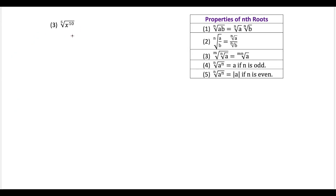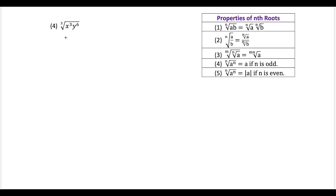For the third question, we want to find the fifth root of x to the 10, and once again we don't need the absolute value. One way to see this is that our index is odd. So this is just x to the 10 over 5, which is equal to x squared. And if we were to add the absolute value, the absolute value of x squared is just x squared anyway — so x squared is our simplified answer.